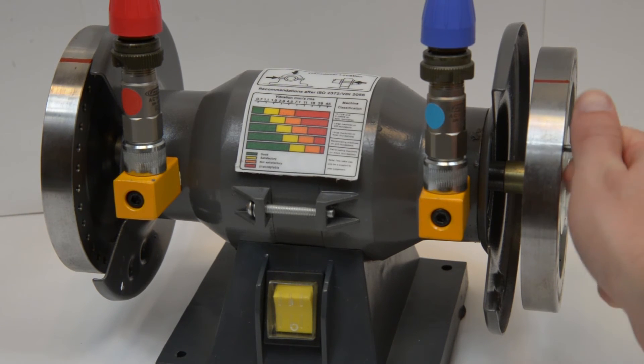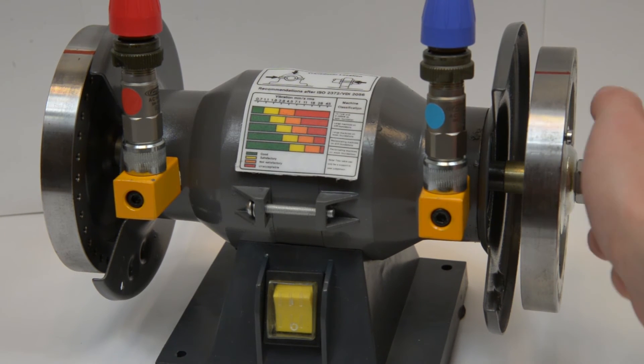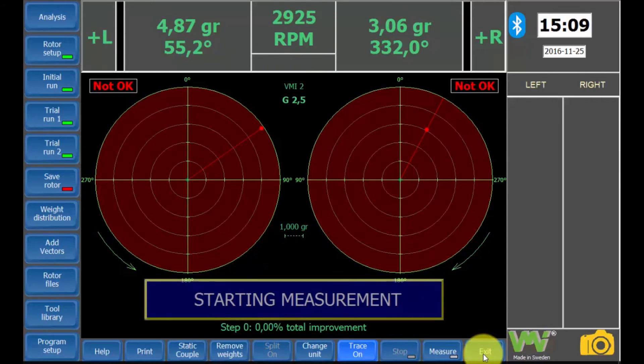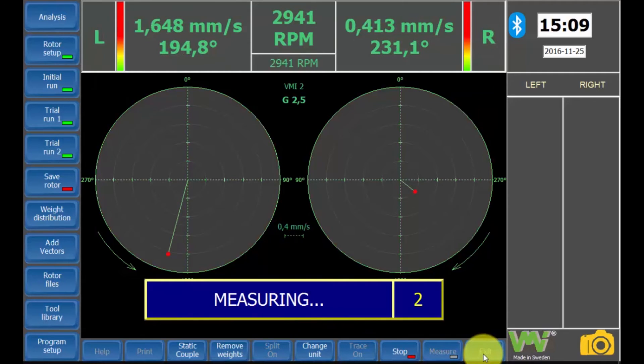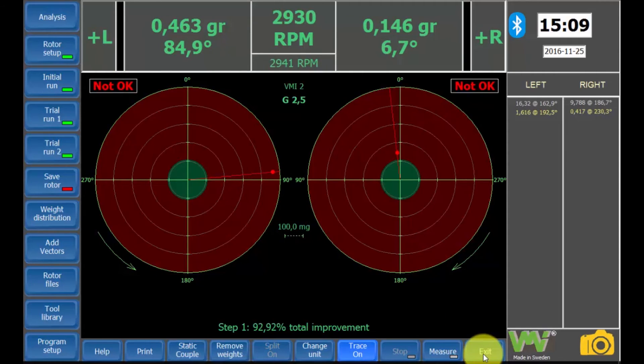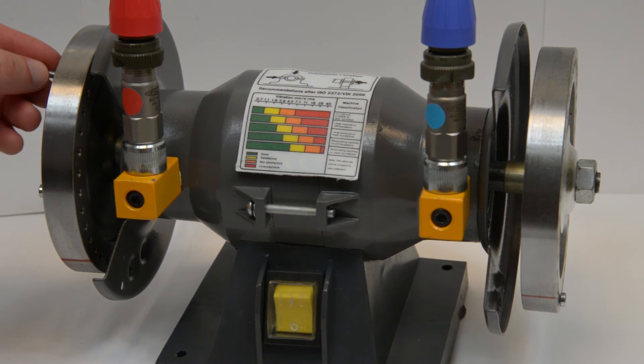For best results, add weights in the left and right balancing planes as close as physically possible. When the weights are mounted, start the motor once again and the measuring will begin. On the bottom side of the screen, we can see that we now have a 92.92% improvement, but the results are still not okay according to the specified tolerance. Repeat the process again with the new suggested weights.